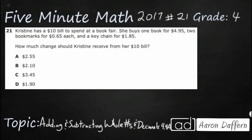So Christine is going to spend a $10 bill at the book fair. She's going to buy one book for $4.95, two bookmarks — pay attention to that — for 65 cents each, and then a keychain, so that's also just one, for $1.85.